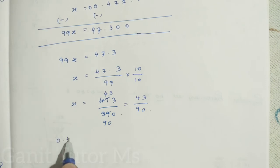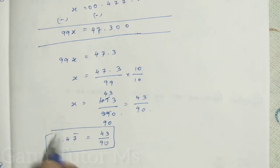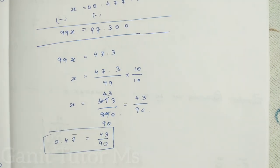43 divided by 90. So what we assume as the X value? 0.47 bar which is equal to 43 by 90. We find out that P by Q form. Clear?